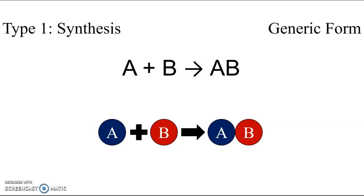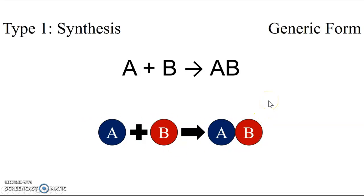The generic form of the synthesis reaction is listed as A plus B react to produce AB. If you're having a little bit of trouble visualizing what this would look like in terms of particle pictures, I've provided a particle picture version of the generic equation for you. This is saying that element A reacts with another species B to produce a compound.